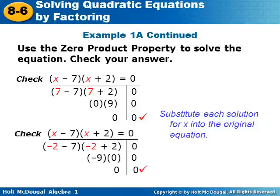If we plug in negative two, we would get negative two minus seven times negative two plus two, and we would get negative nine times zero, which also equals zero.